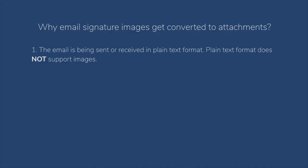That's the most common reason email signature images get converted to attachments. Another reason is that the images in the email signature are embedded instead of linked. Embedded images have a content ID, whereas linked images are hosted on an image hosting platform via a hyperlink. If your images are embedded, Outlook is more likely to add them as attachments rather than keep them in the body of the email. If you use linked images, Outlook is more likely to retain them in the body of the email, which is what you want.